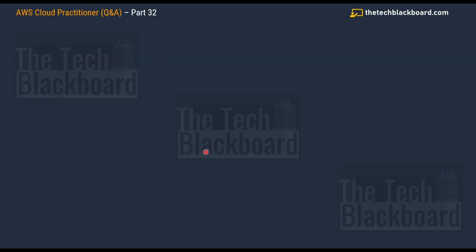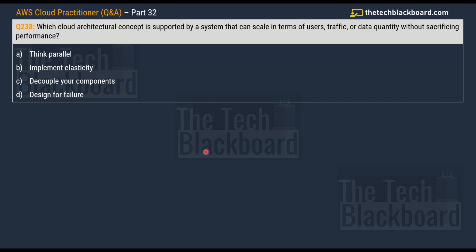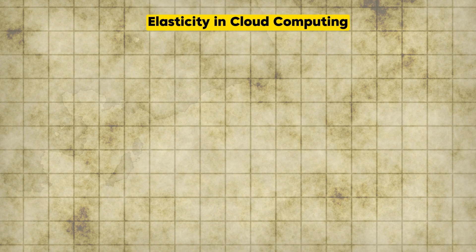Please do not miss the next episode where I'll cover important questions on VPNs, VPCs, and related concepts. Now, question 238 asks: which cloud architectural concept is supported by a system that can scale in terms of users, traffic, and data quality without sacrificing performance? The options are: A) Think Parallel, B) Implement Elasticity, C) Decouple your components, and D) Design for Failure.